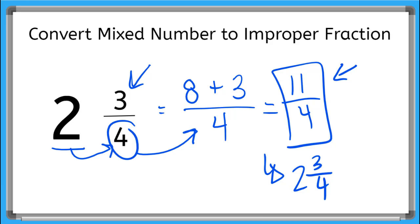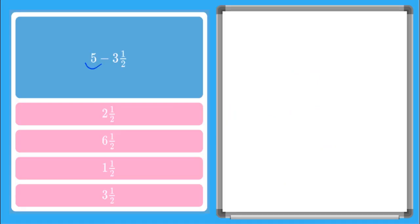Now let's use this idea of converting mixed numbers to improper fractions to subtract. Here I have a whole number minus a mixed number: 5 minus 3 and a half. Let's convert this mixed number to an improper fraction.